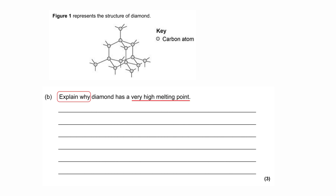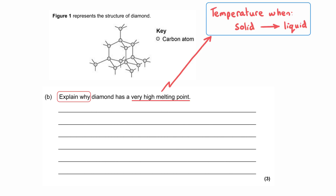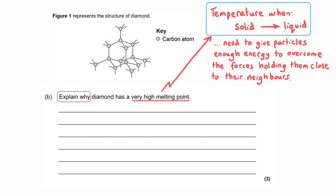The next question asks us to explain why diamond has a very high melting point. The melting point is the temperature at which a substance changes state from solid to liquid. As a solid, particles are close together with strong forces holding them in a rigid arrangement. To change state, those forces must be weakened. Because diamond has a very high melting point, we need to break many covalent bonds to separate those carbon atoms.